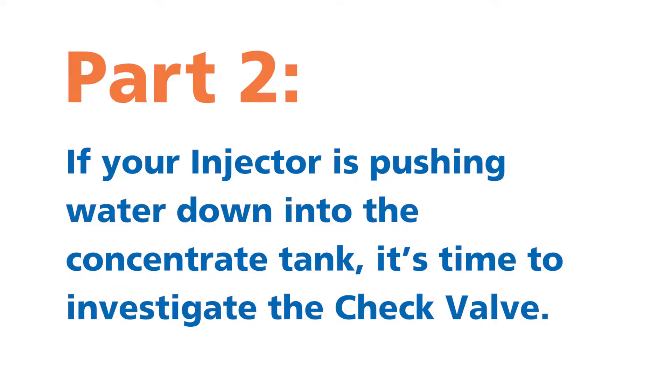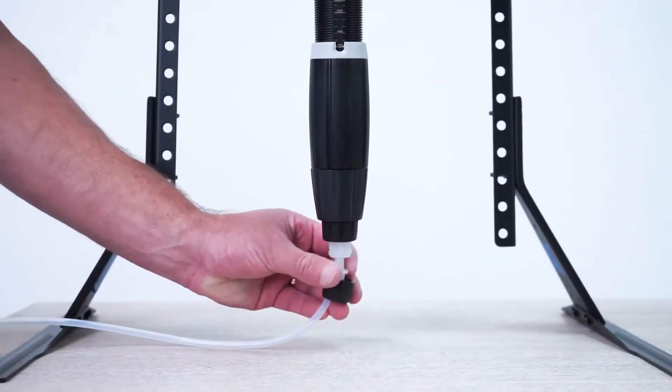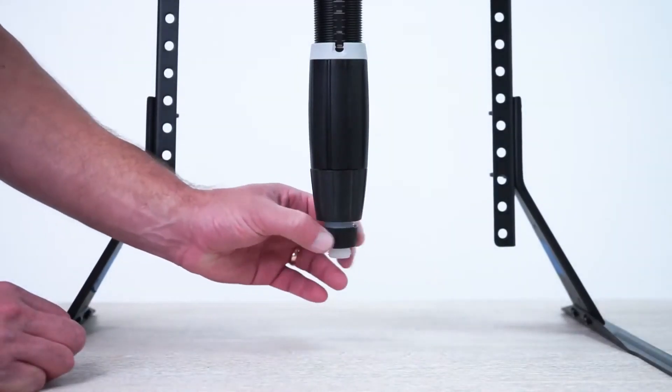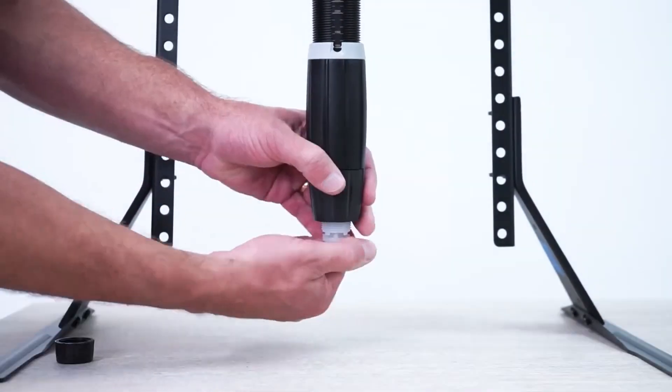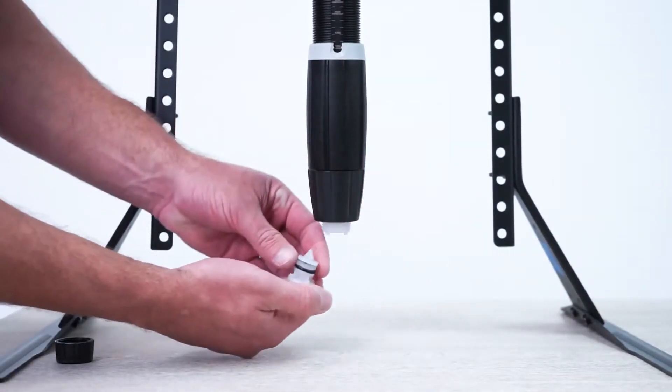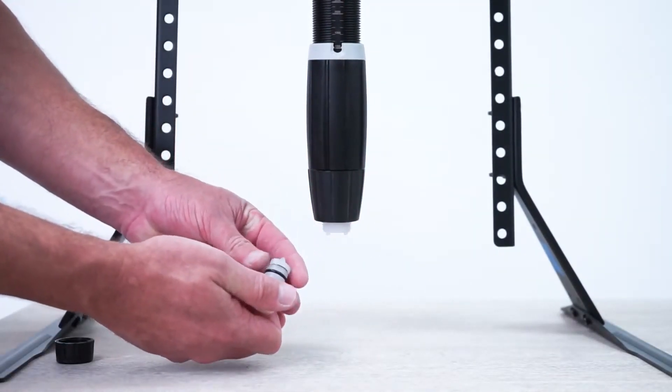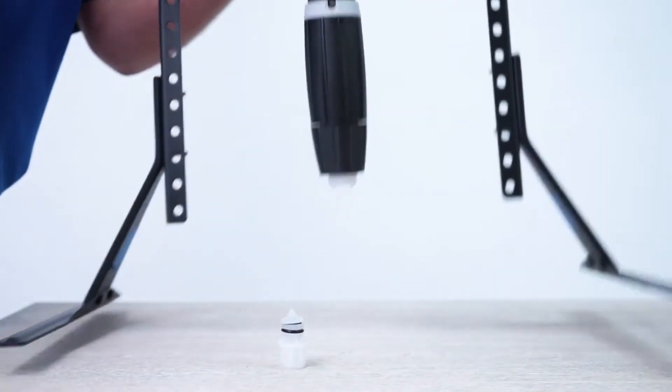Part two: if your injector is pushing water down into the concentrate tank, it's time to investigate the check valve. To do this, remove the hose nut and set it aside. Unscrew and remove the check valve nut. Grasp the white threaded barb and pull the check valve assembly straight out. It might come out in two pieces. Set the unit aside.